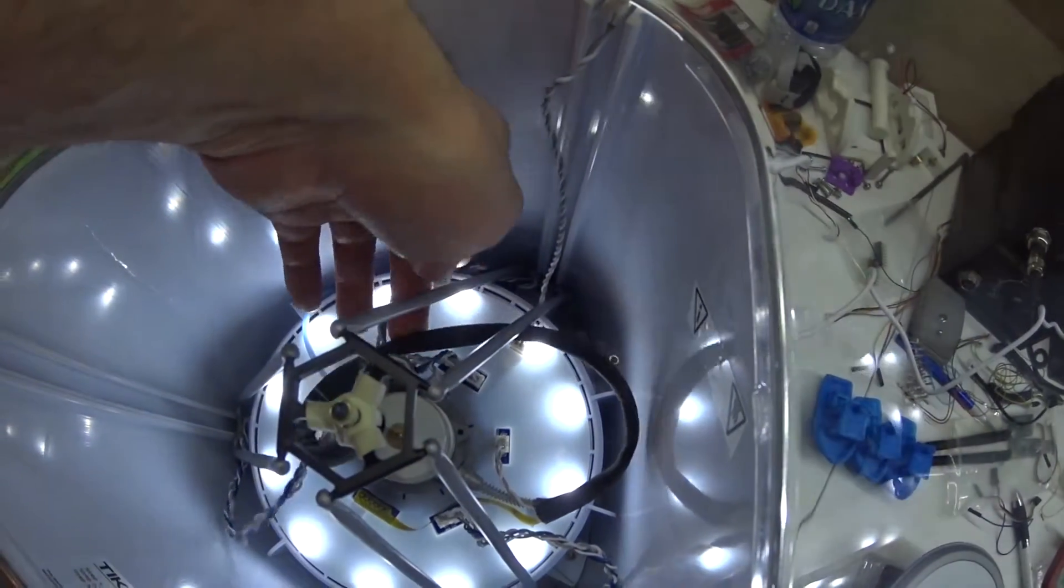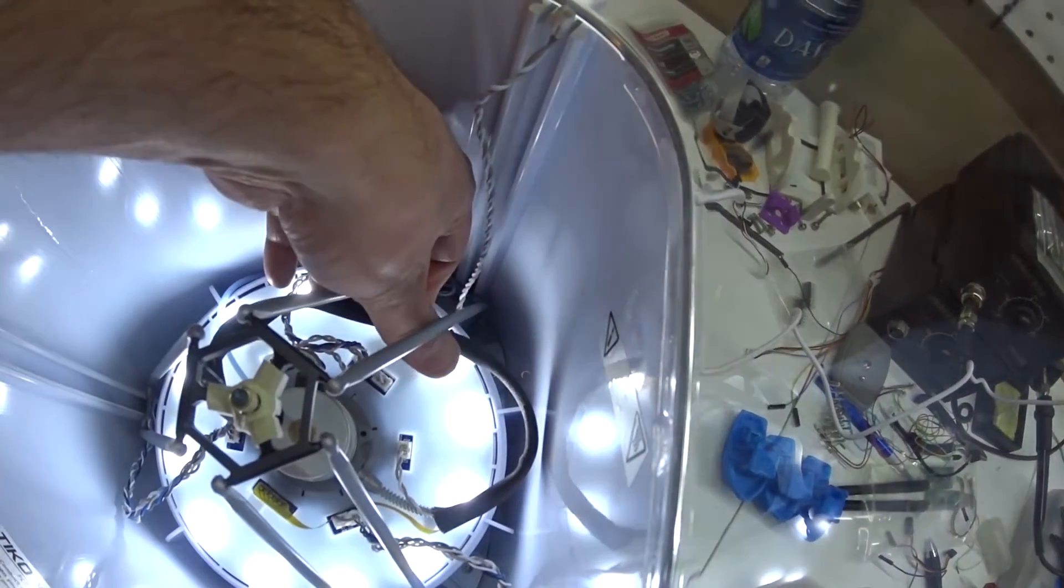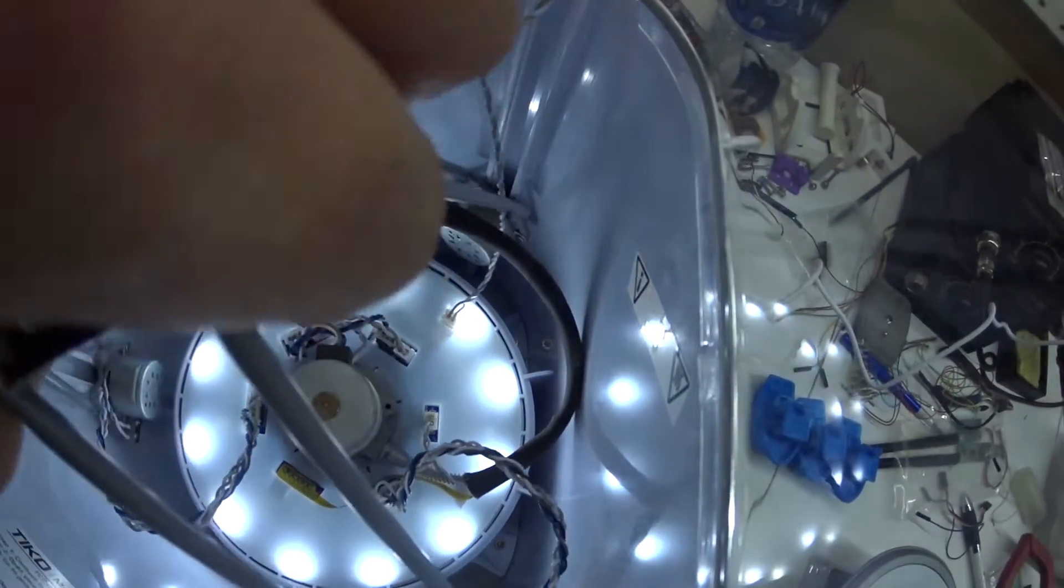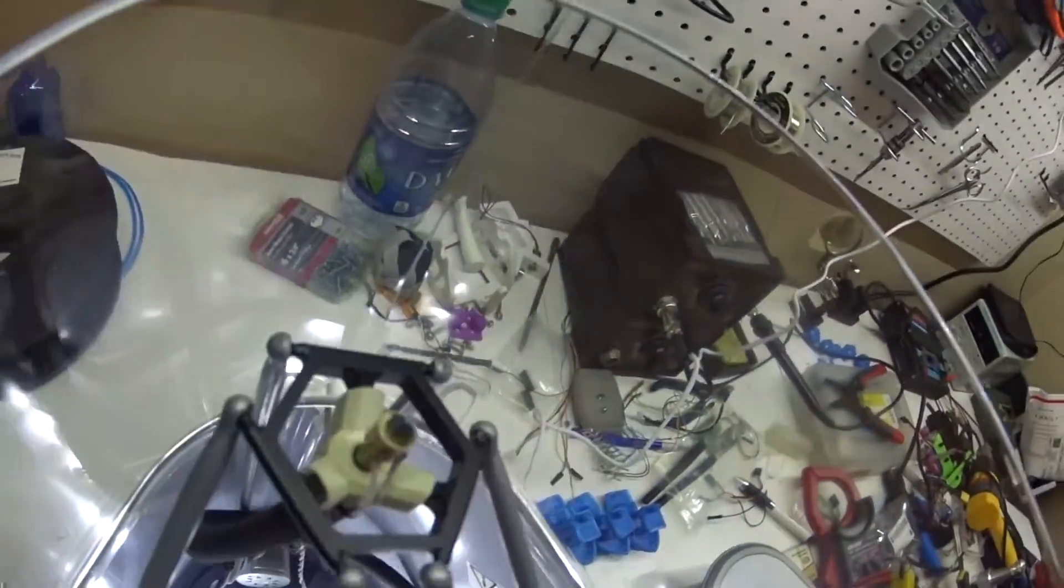You can see back here that the Bowden tube presses this arm back this way whenever it's resting. So I'm assuming that the arms, or one of the arms, is bowed again.